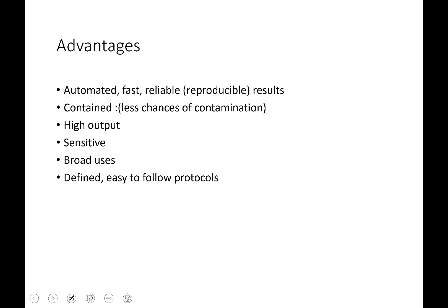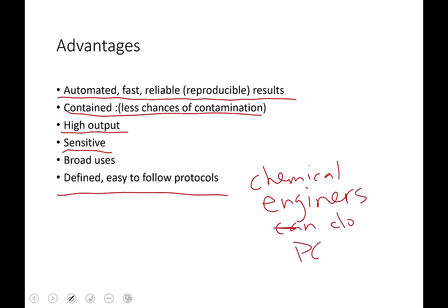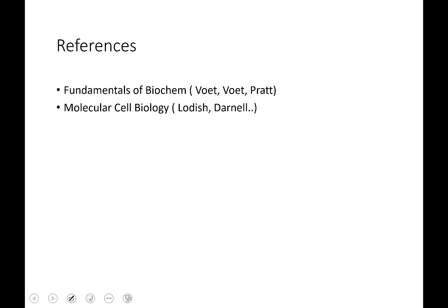So there's a lot of advantages to this. It's automated, fast, reliable, very reproducible results. It's contained in a tiny little vial. So you aren't going to get any contamination from other sources of DNA. You get a lot of DNA out. It's super sensitive because of those primers. So it has a lot of applications and it's really easy to use. Even chemical engineers can do PCR. And if you take the 194 lab next spring, you too will get to do PCR. And that ladies and gentlemen is the end of my presentation. Thank you.